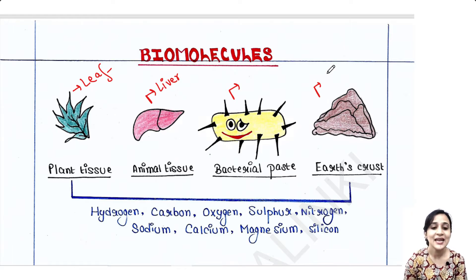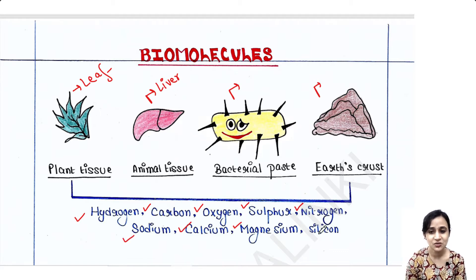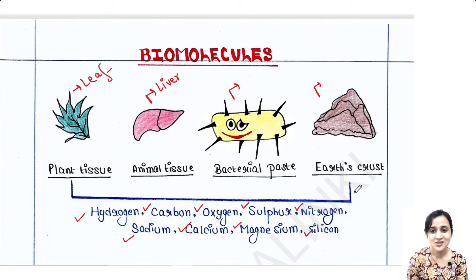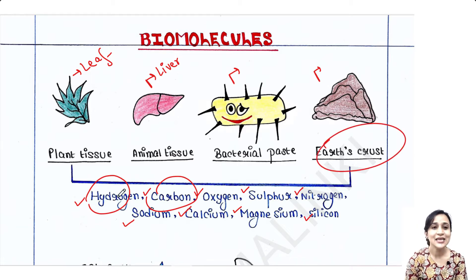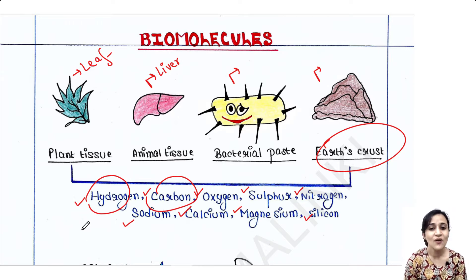You will get some common components like hydrogen, carbon, oxygen, sulfur, nitrogen, sodium, calcium, magnesium, and silicon. These components are found in all of them. Although you will get hydrogen and carbon in living tissue as well as in earth's crust, you will get them in more abundance in living tissues — in animals or plants.